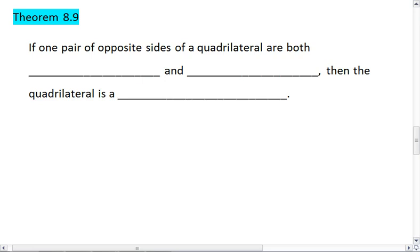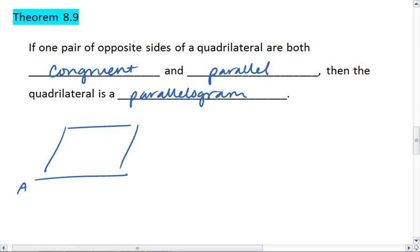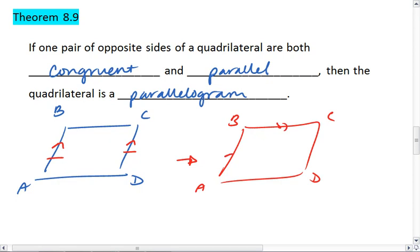Theorem 8.9 tells me that if one pair of opposite sides of a quadrilateral are both congruent and parallel, then the quadrilateral is a parallelogram. So if I have a quadrilateral and I see that one pair of sides is both parallel and congruent, then I know that this shape is a parallelogram.